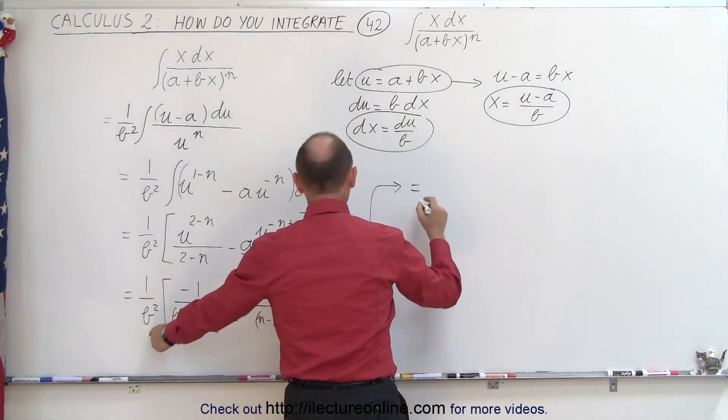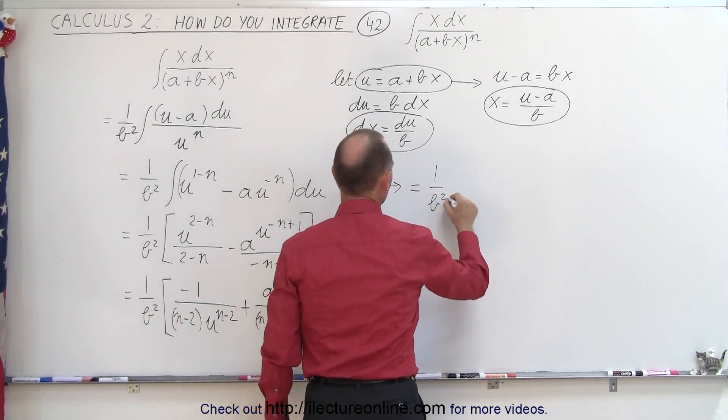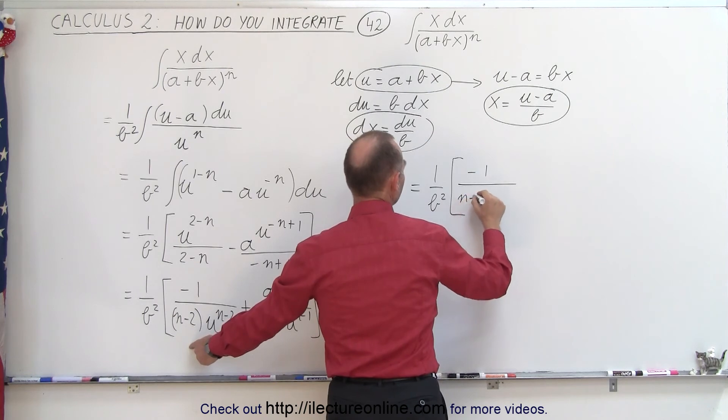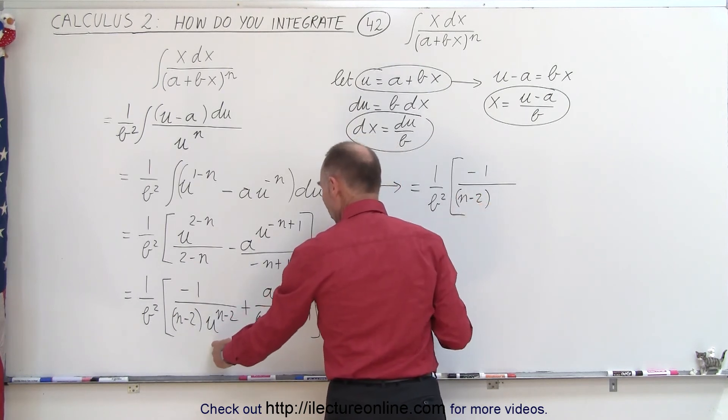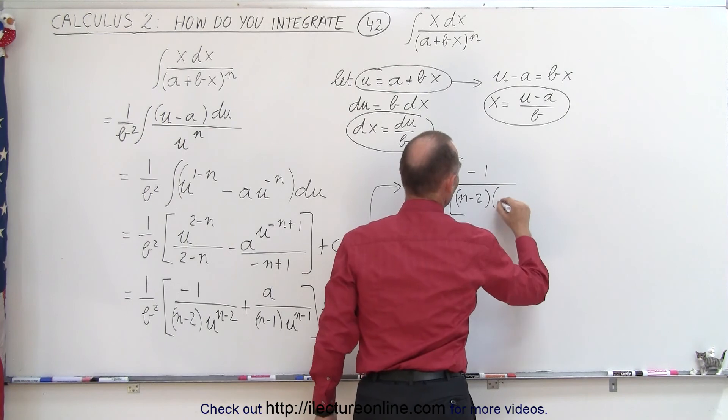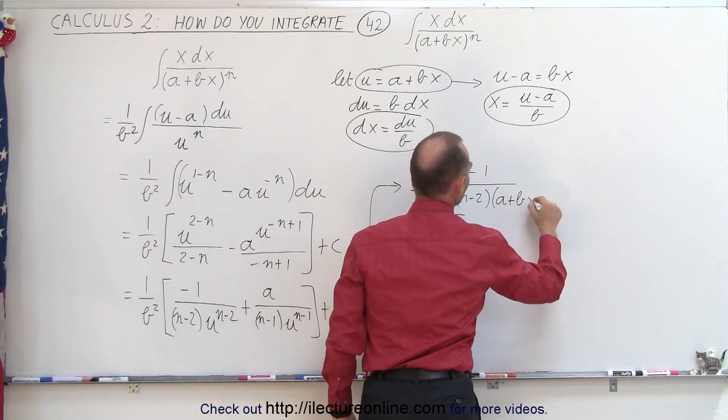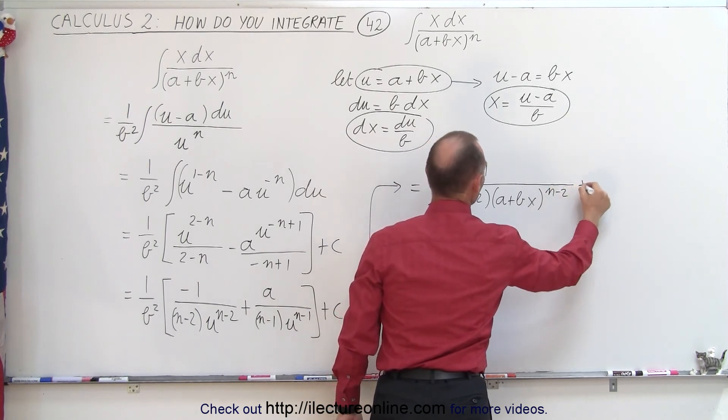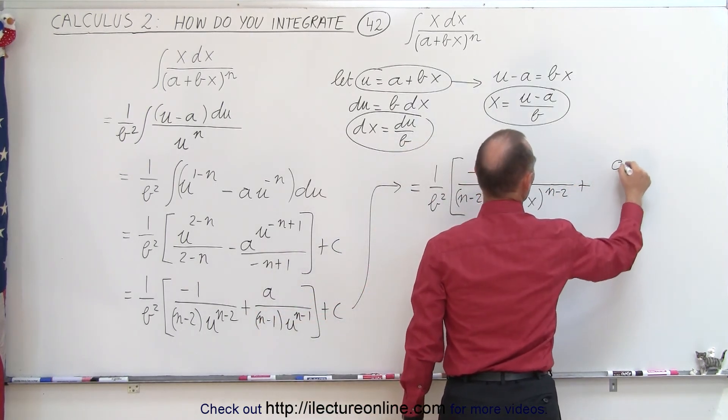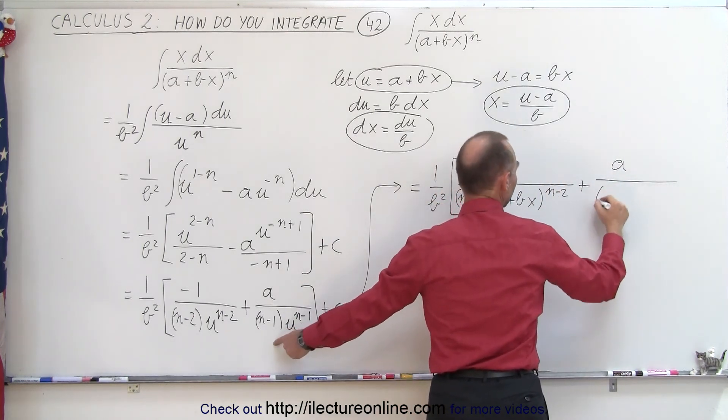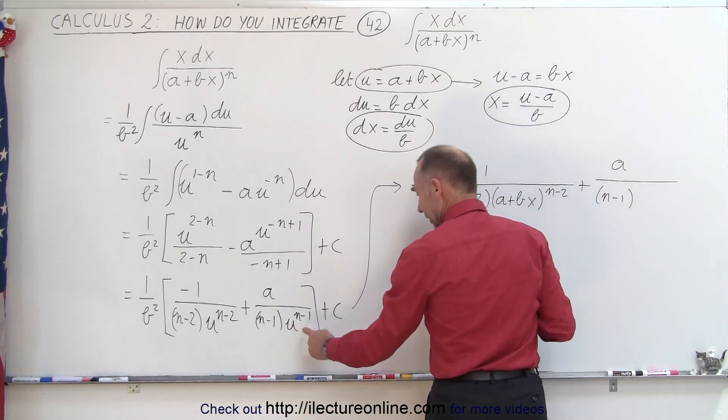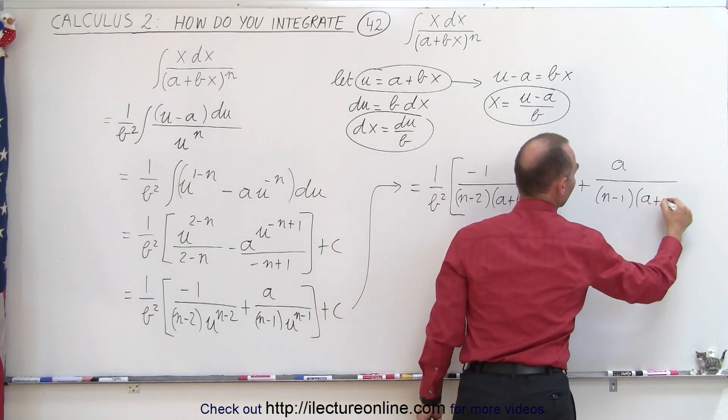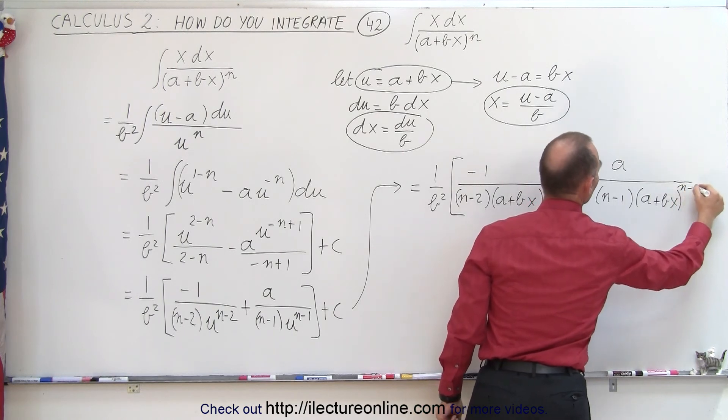So this becomes equal to 1 over b squared times minus 1 divided by n minus 2, and then the quantity u to the n minus 2 now becomes a plus bx, a plus bx to the n minus 2, plus the second fraction here we get a in the numerator divided by n minus 1, and then here we get u to the n minus 1, but u is equal to a plus bx so we have a plus bx to the n minus 1.